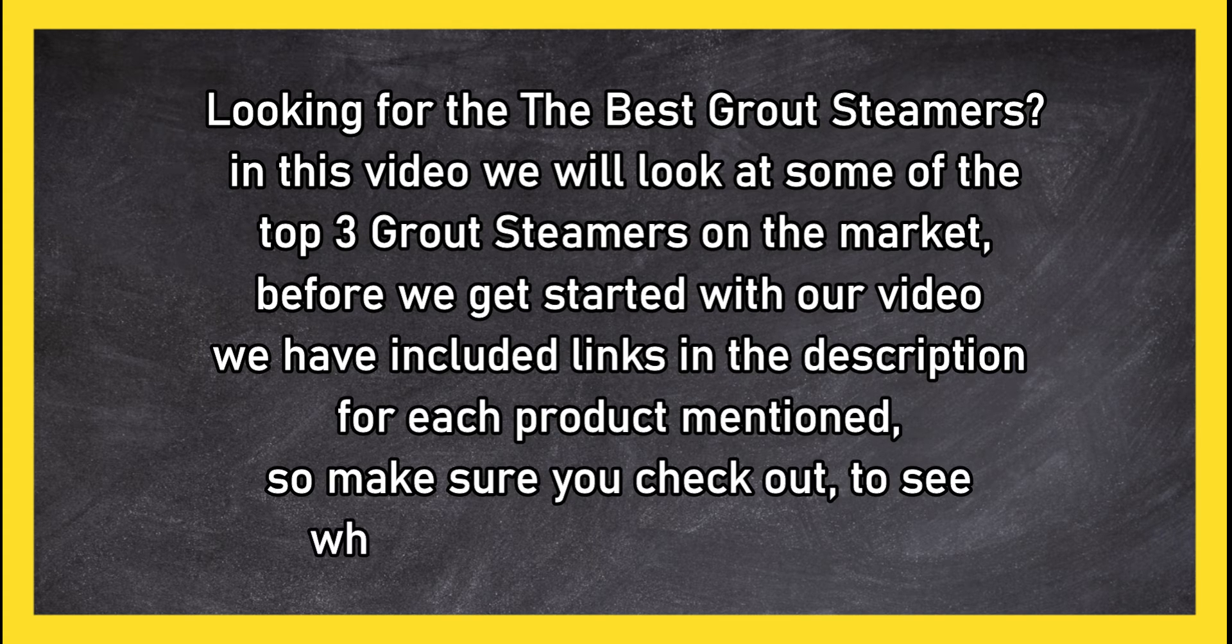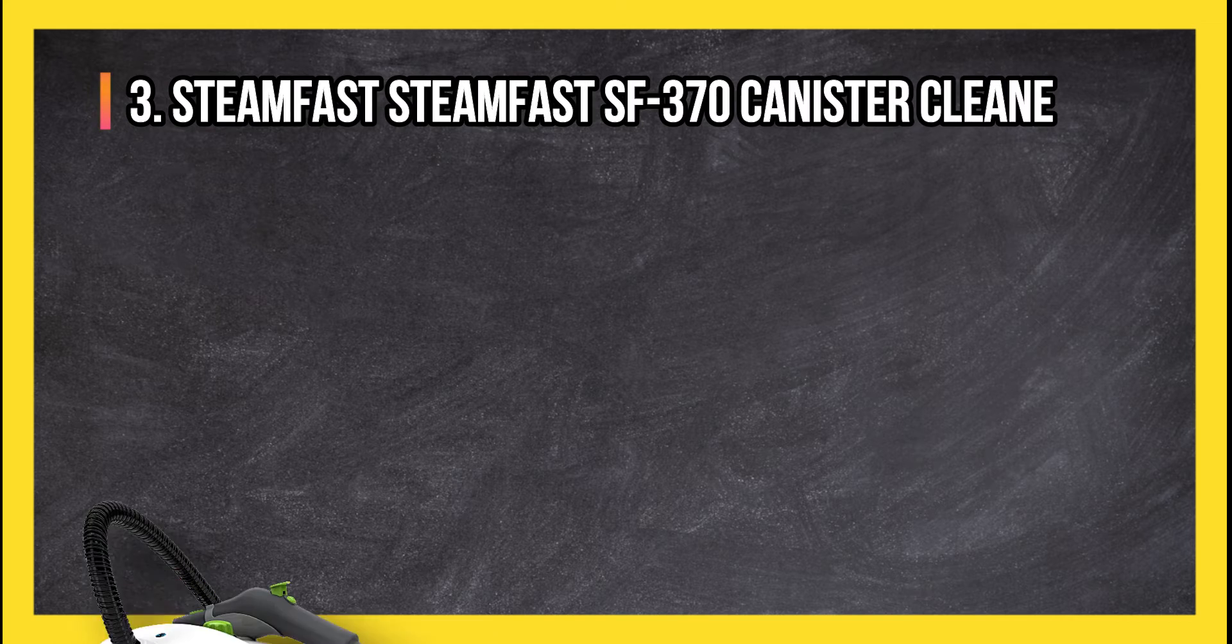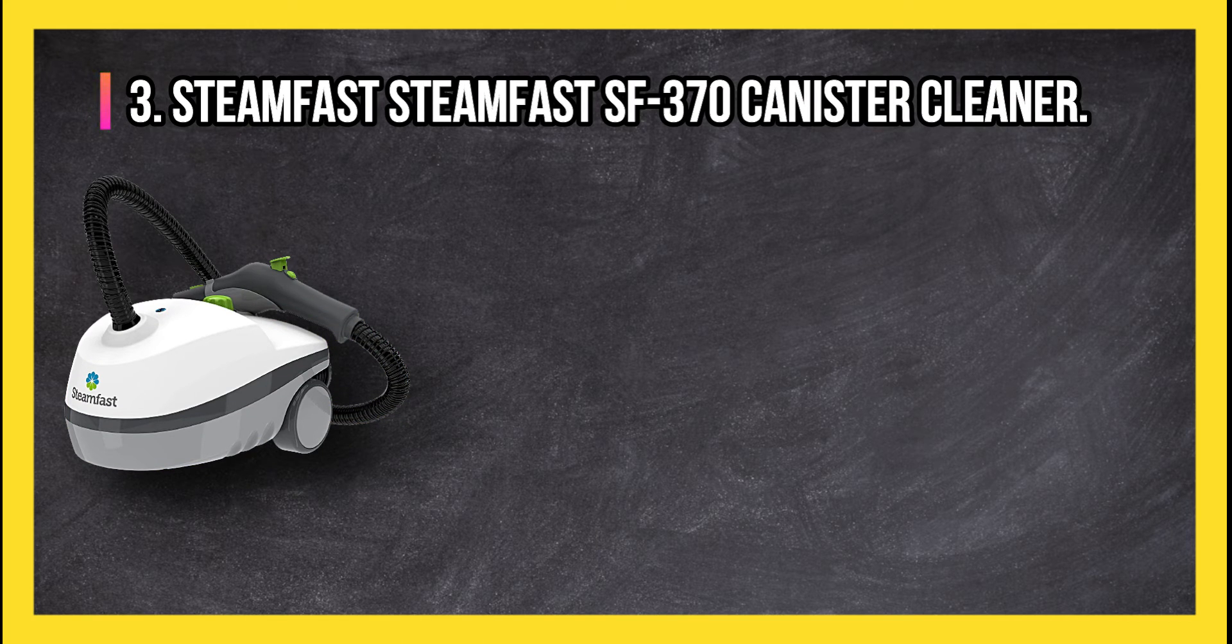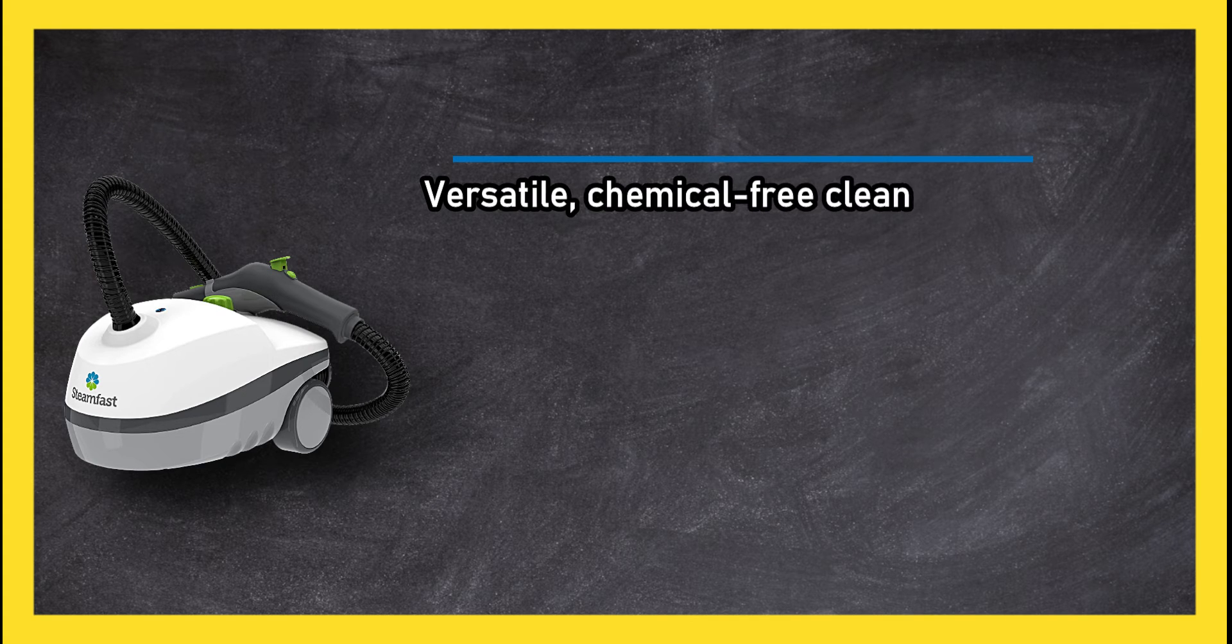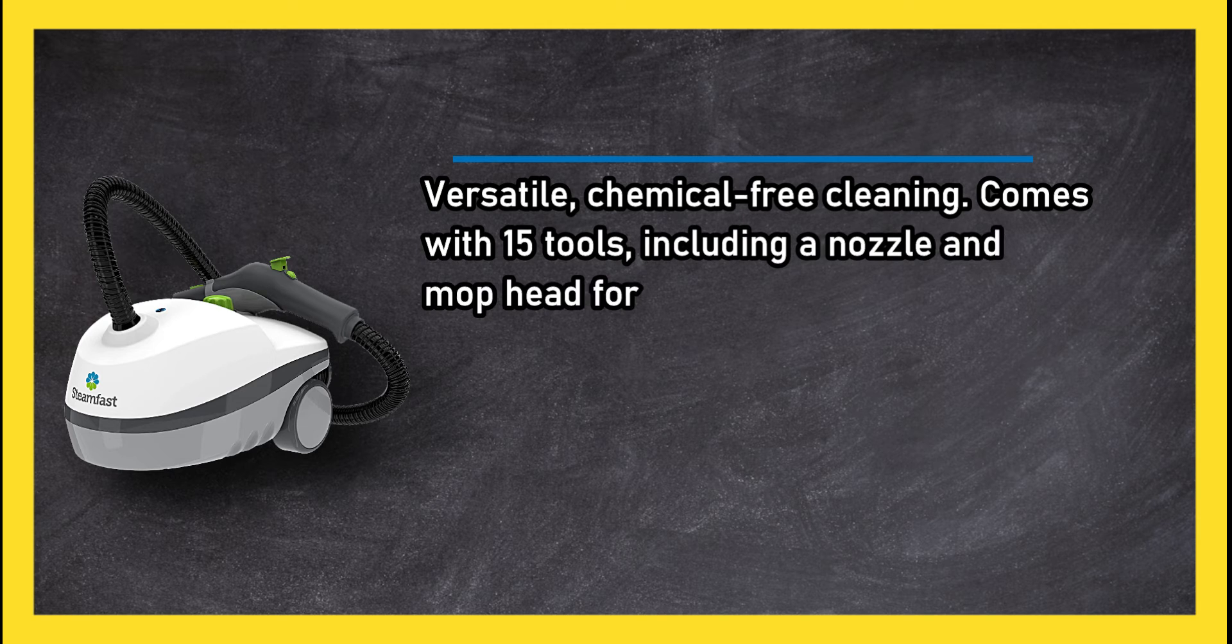So make sure you check out to see which is in your budget range. At number 3: Steam Fast SF 370 canister cleaner. Versatile chemical-free cleaning, comes with 15 tools including a nozzle and mop head for steaming floor and wall grout.